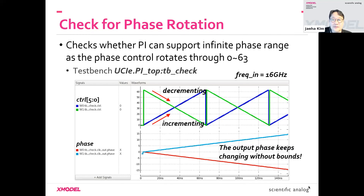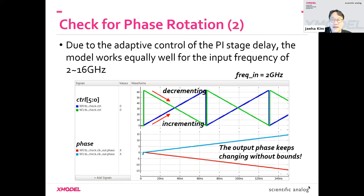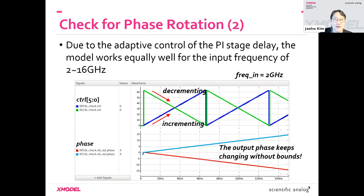We ran the same simulation at the other extreme of 2 GHz, and the output is exactly the same, which is expected. This means our phase interpolator stage is capable of operating across a wide frequency range, from 2 to 16 GHz.